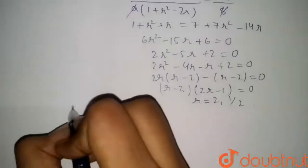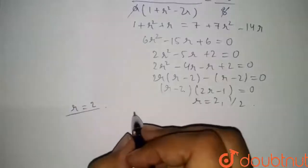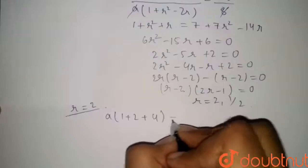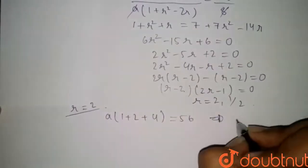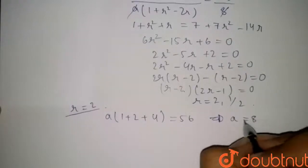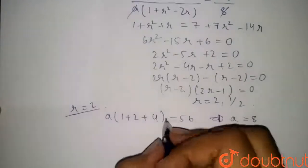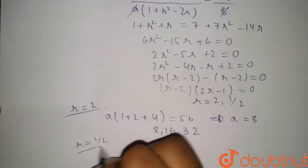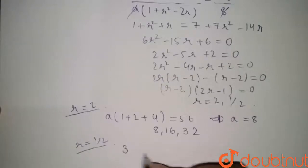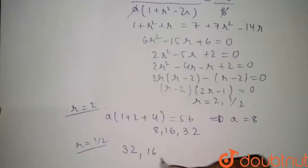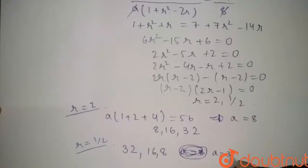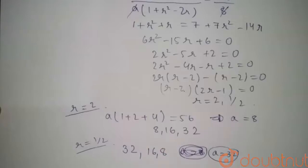When r = 2, from equation 1: a(1 + 2 + 4) = 56, so a = 8. The three numbers in GP are 8, 16, 32. When r = 1/2, a = 32, and the three numbers in GP are 32, 16, 8. So the three numbers are 8, 16, and 32, or 32, 16, and 8.